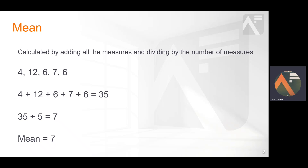For example, we would firstly add all the values, which equals 35. Then, as there are 5 numbers in our list, we would divide 35 by 5. This gives us the mean of 7.